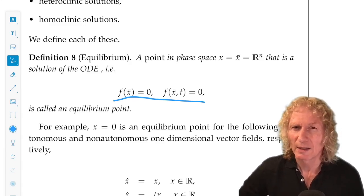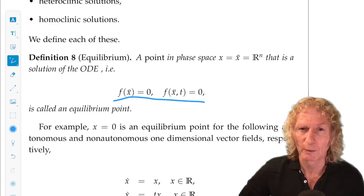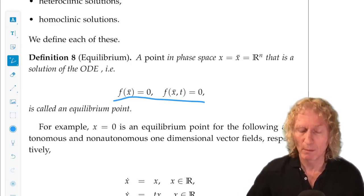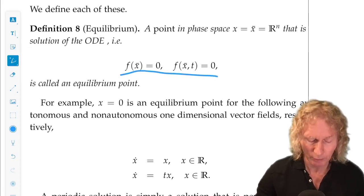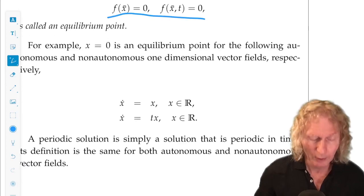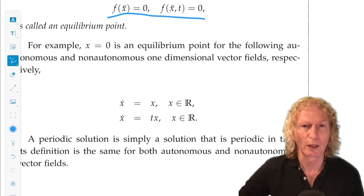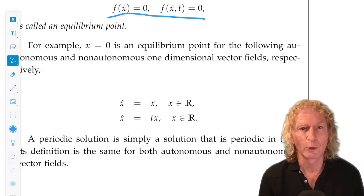Okay, these are not as commonly studied for non-autonomous systems. Nevertheless, they can occur in this way, but a bit more unusually in applications. But we'll get to that a little bit later. So here's an example of an autonomous and non-autonomous equation where x equals zero is an equilibrium solution.